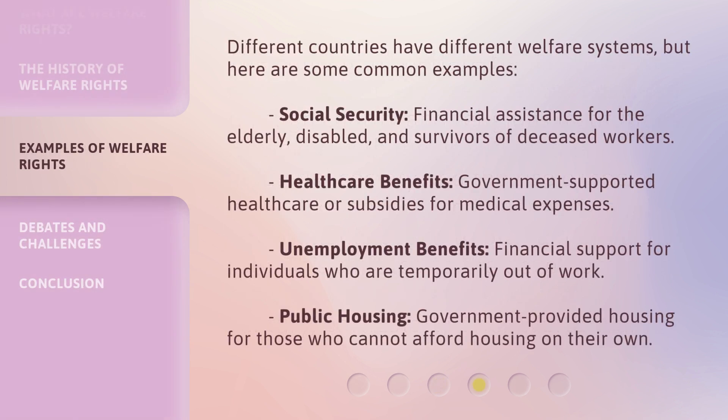Different countries have different welfare systems, but here are some common examples. Social Security: financial assistance for the elderly, disabled, and survivors of deceased workers. Health care benefits: government-supported health care or subsidies for medical expenses. Unemployment benefits: financial support for individuals who are temporarily out of work. Public housing: government-provided housing for those who cannot afford housing on their own.